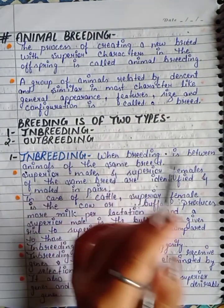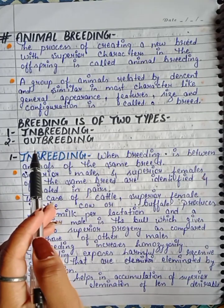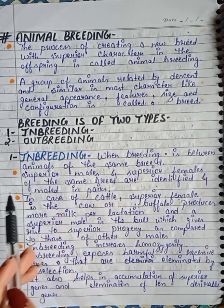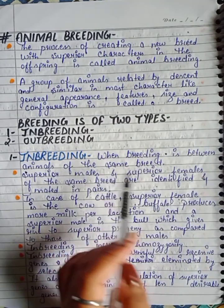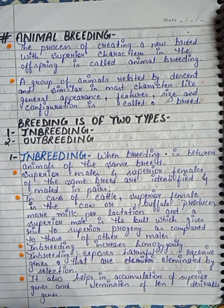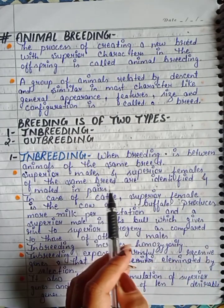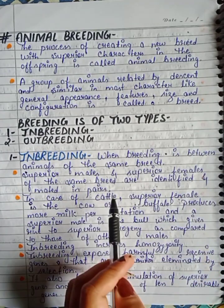Breeding is of two types: first is inbreeding, second is outbreeding. Inbreeding is when breeding occurs between animals of the same breed. In inbreeding, superior males and superior females of the same breed are identified and mated in pairs.